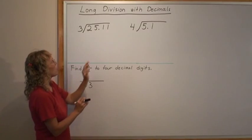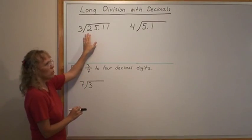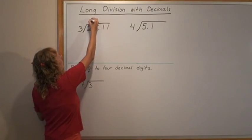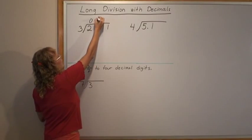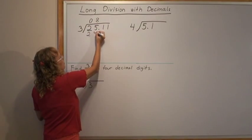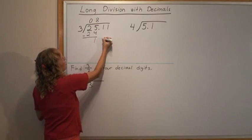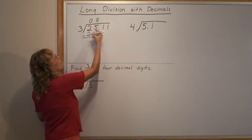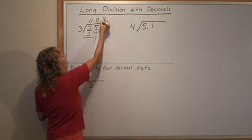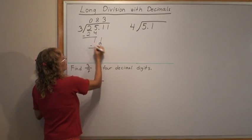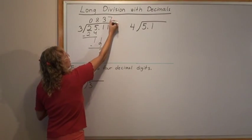You just divide as if there was no decimal point. 3 goes into 2, 0 times, and 25, 8 times, 24, subtract 1, drop down this 1, and 3 goes into 11, 3 times, then subtract, 21, and 7.